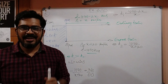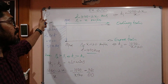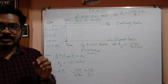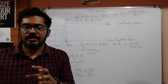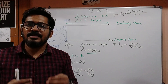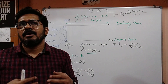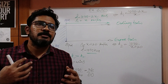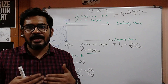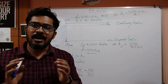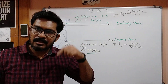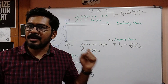Let us solve question number seven of exercise 60. This question is a bit lengthy but not difficult. You just need to understand how the speed, distance, and time of the two trains mentioned in the question are related. If you get that understanding, the solving part will become a cakewalk.